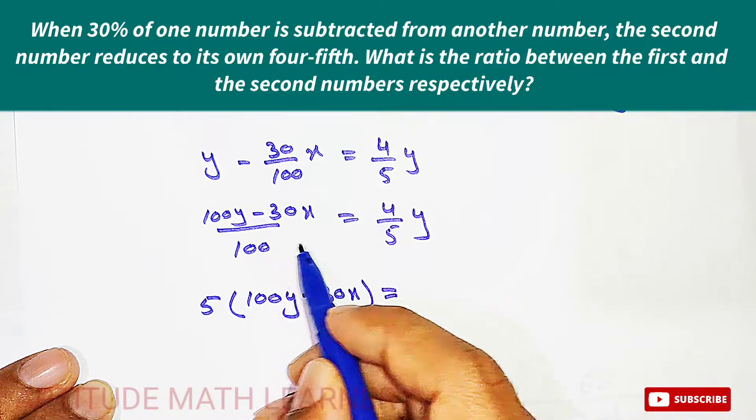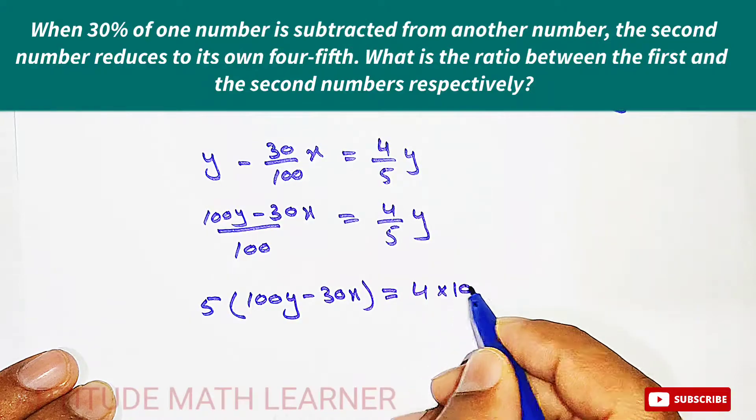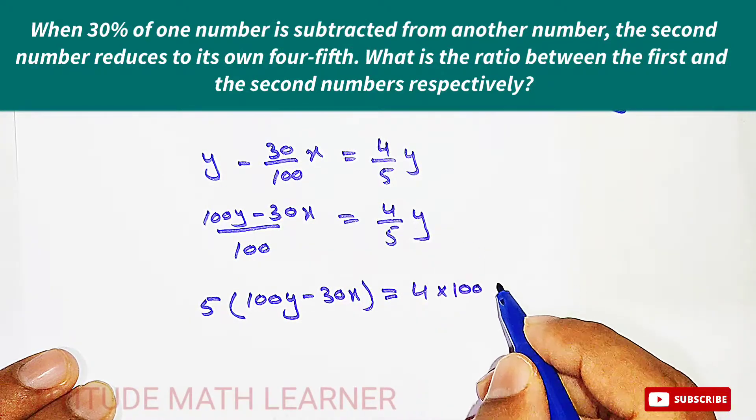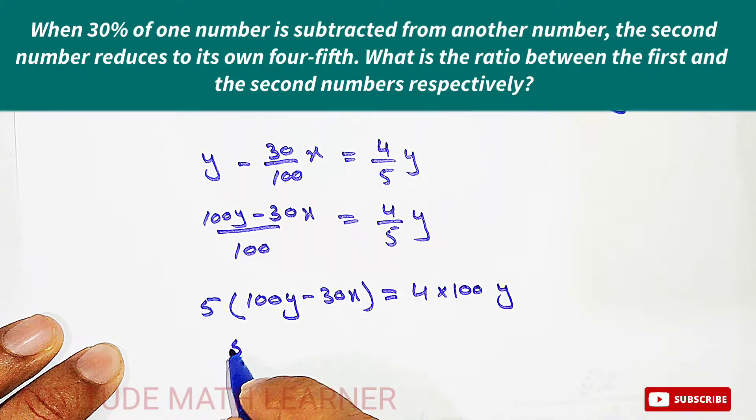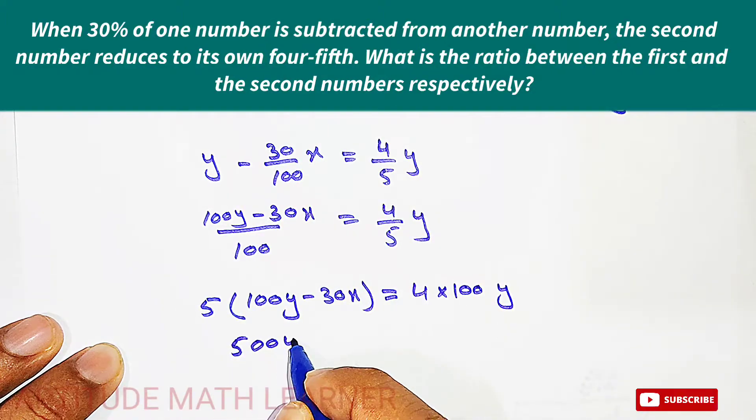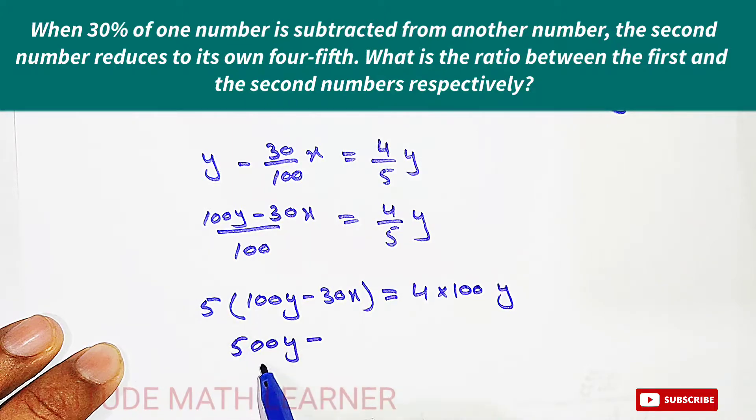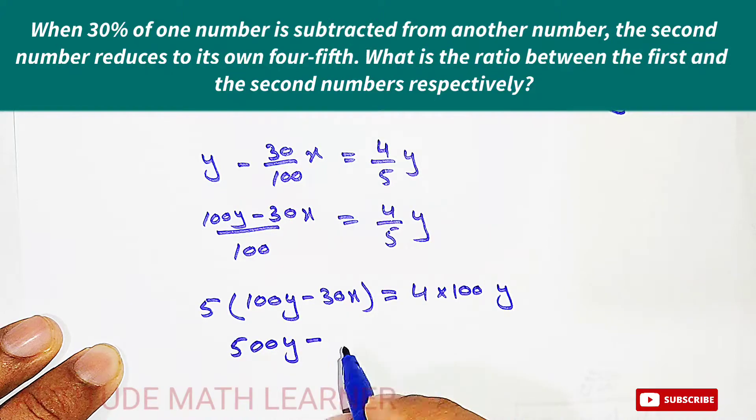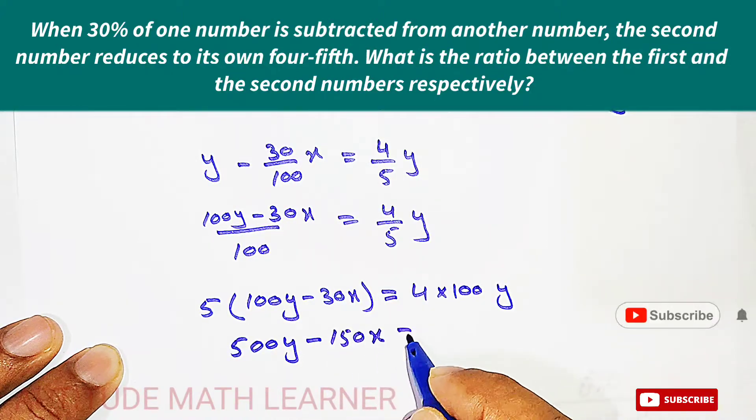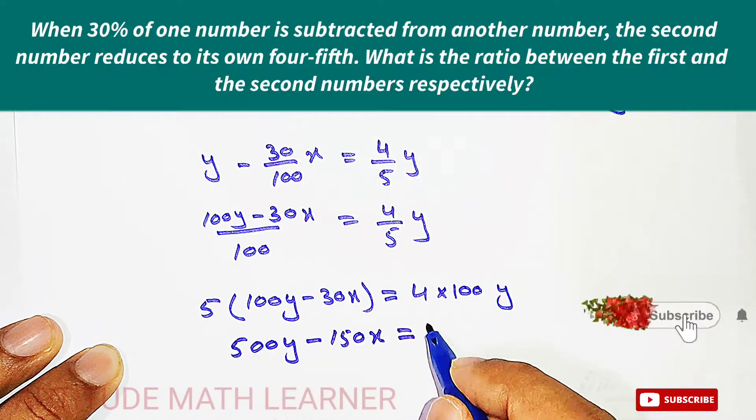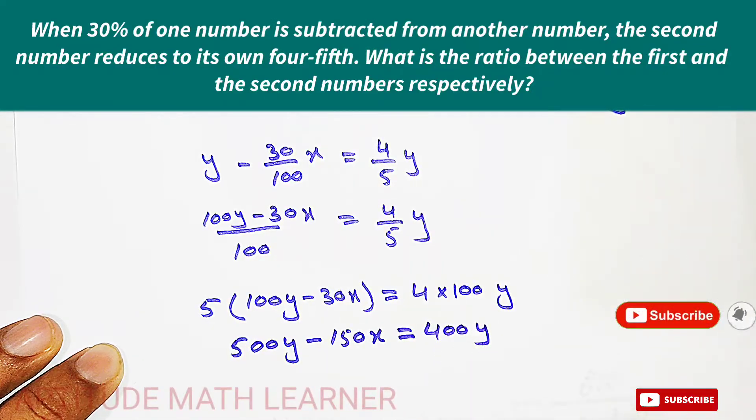That is 100y minus 30x is equal to, and this 100 goes upward and it multiplies by 4. So 4 multiplied by 100, and here we are having y. And now this becomes 500y minus, so 5 multiplied by 100 is 500, and 5 multiplied by 30 is 150x is equal to 4 multiplied by 100 that is 400y.